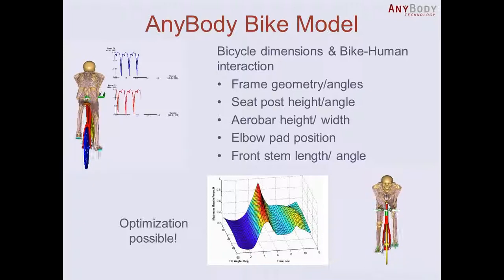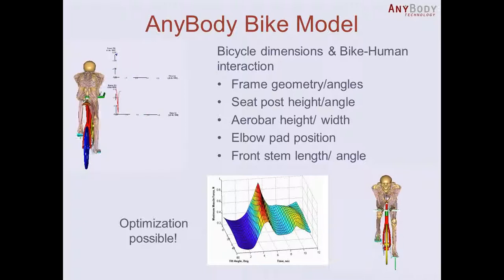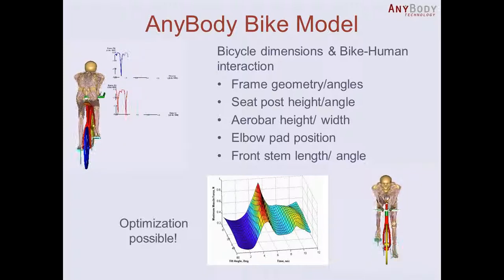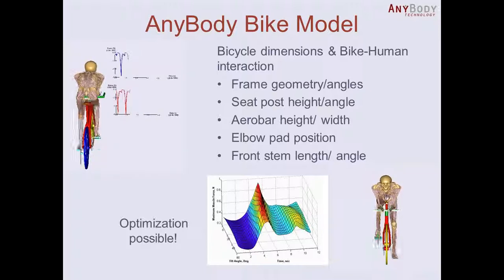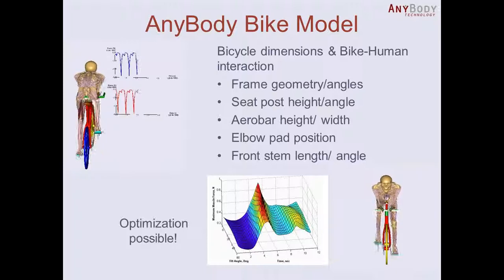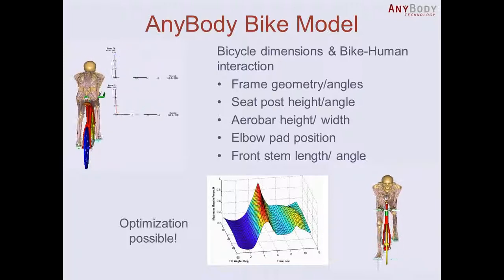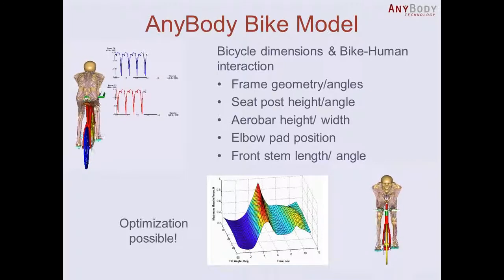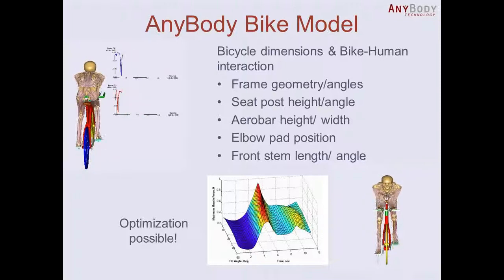You can find the optimal seat position — seat post height and angle — for your rider. You can also analyze the aero bar height and width, and how far those two bars are from each other. You can, for example, look at shoulder forces during the riding position.